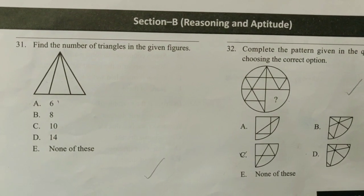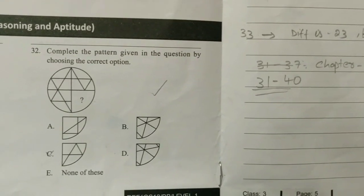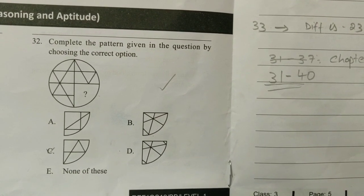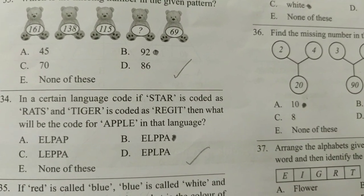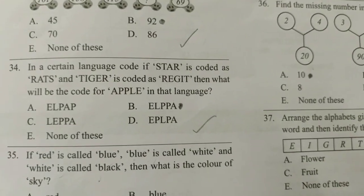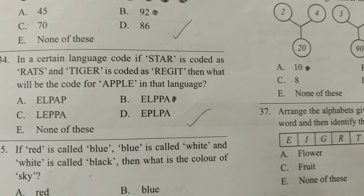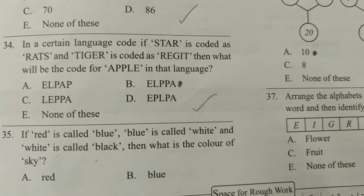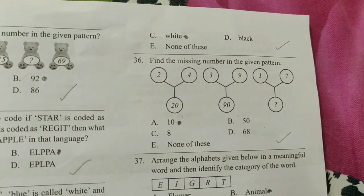Question 31: Find the number of triangles in the given figure — the answer is A. Question 32: Complete the pattern given in the question by choosing the correct option — the answer is C. Question 33: Which is the missing number in the given pattern? The answer is B; find the difference between the two numbers to get the correct answer. Question 34: In a certain language code, if 'star' is coded as 'rats' and 'tiger' as 'rigget,' what is the code for 'apple'? The answer is B. Question 35: If red is called blue, blue is called white, and white is called black, what is the colour of the sky? The answer is C — white.